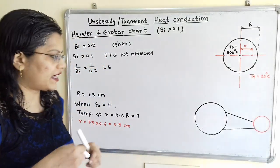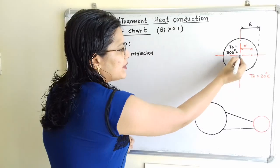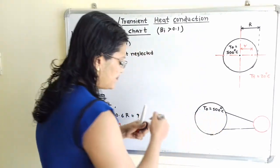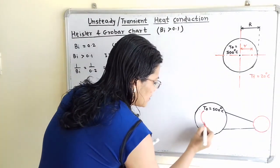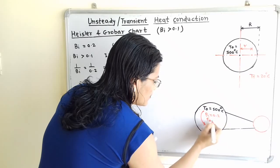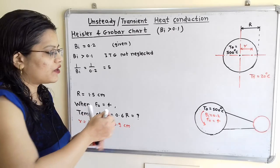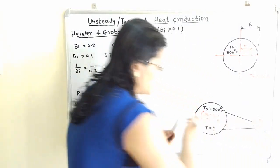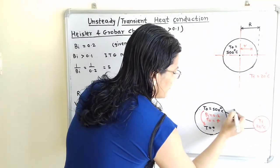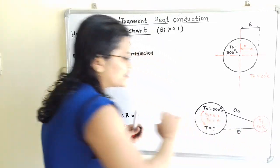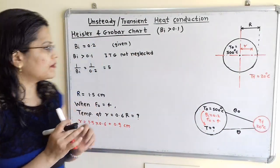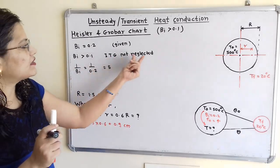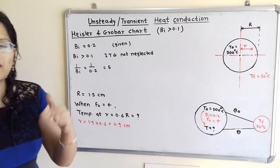For this temperature, the condition is that Fourier number is 4 and Biot number is 0.2. We must first find the temperature at the center, then use that to find the temperature at the selected point. Since the Biot number is greater than 0.1, we must consider the internal temperature gradient — that is, the internal temperature gradient is not neglected and we must use the graphical method.